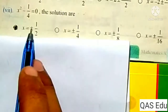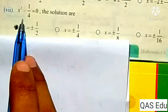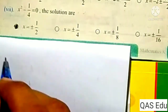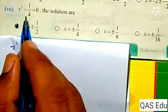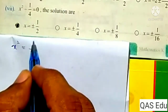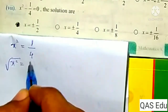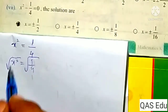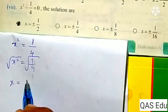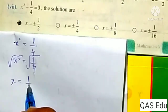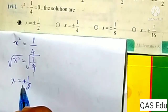MCQ number 7: x squared minus 1 over 4 equals 0. The solutions are. For this equation we get x squared equals 1 over 4. Taking square root: x equals plus or minus square root of 1 over 4, which gives x equals plus or minus 1 over 2.